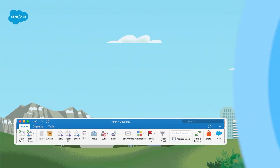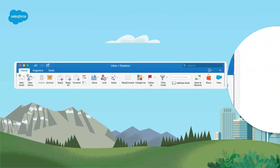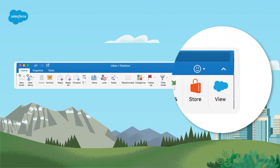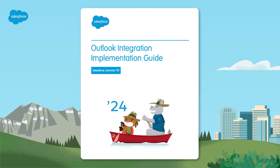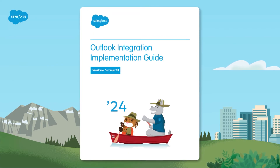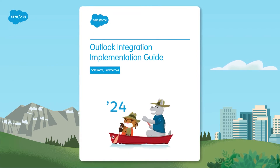Once the Salesforce add-in is available, users simply log in to Microsoft Outlook and click on the cloud icon in the Microsoft ribbon, or in the email body if they are using the Outlook web app. For a more detailed breakdown of the implementation steps and optional features, check out the Outlook Integration Implementation Guide for additional guidance.